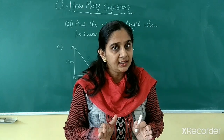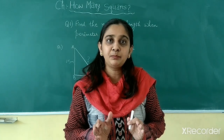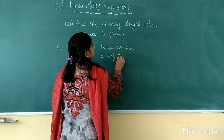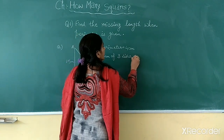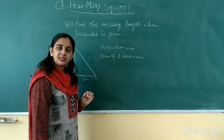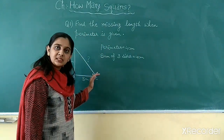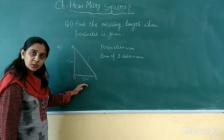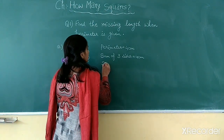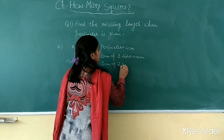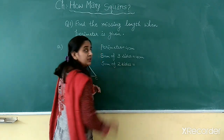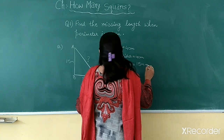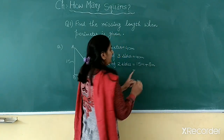According to the definition of perimeter, the sum of 3 sides of a triangle is called its perimeter. So we will write: sum of 3 sides is equal to 14 meter, because in case of a triangle, perimeter is the sum of 3 sides. Now in this triangle, the length of 2 sides is given to us. We can find the sum of those 2 sides: 15 meter plus 8 meter.